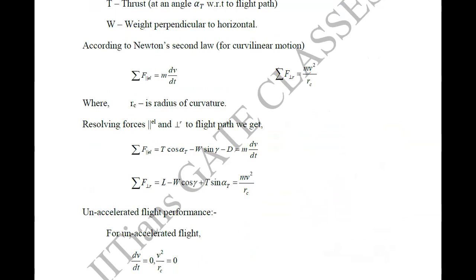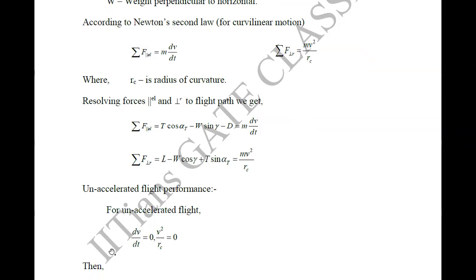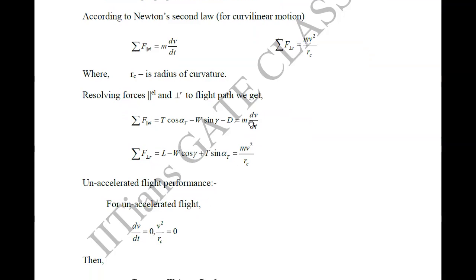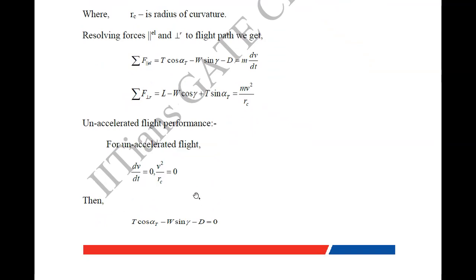First we will see unaccelerated flight performance. For unaccelerated flight performance, both linear acceleration and centripetal acceleration become zero. So dV/dt = 0 and V²/R_c = 0. When I substitute these, the equations simplify to: T·cos(alpha_t) − W·sin(gamma) − Drag = 0, and Lift − W·cos(gamma) + Thrust·sin(alpha_t) = 0.